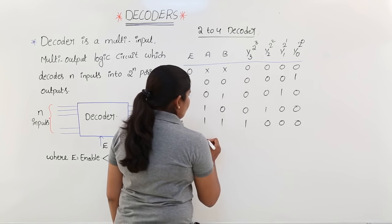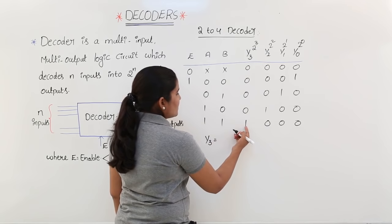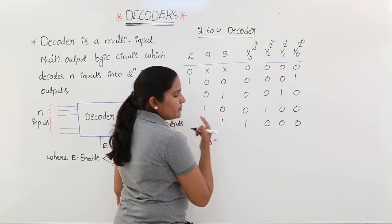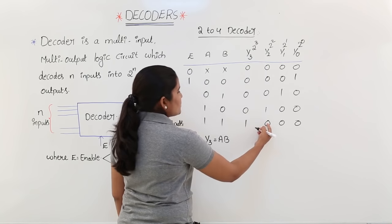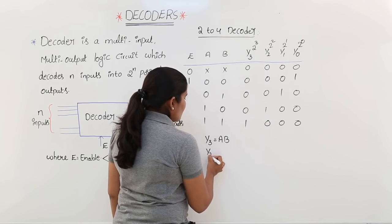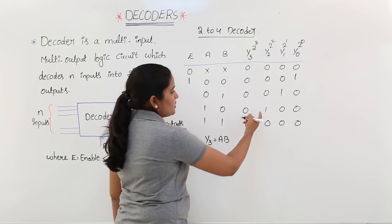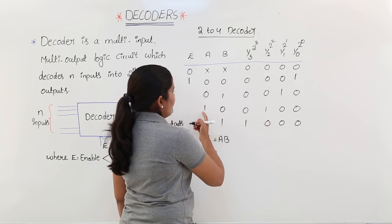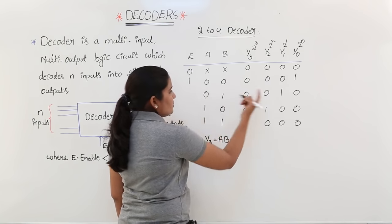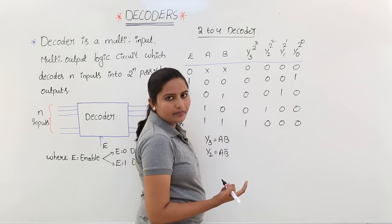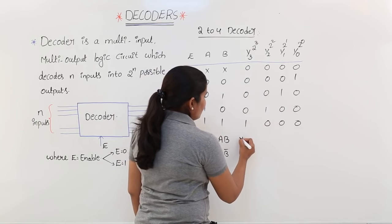Here I am writing the Boolean expressions. Y3 is equal to A·B. Y2 is equal to A·B bar. Y1 is equal to A bar·B.